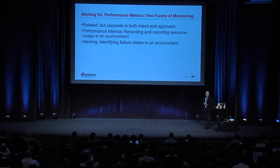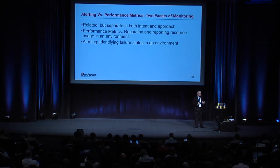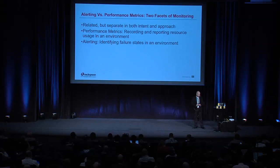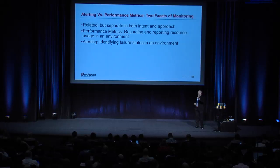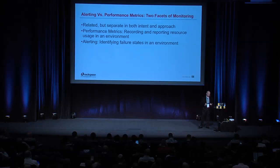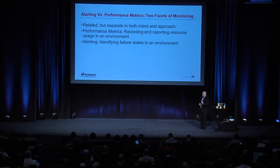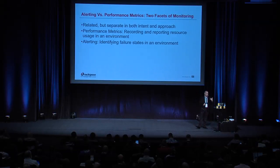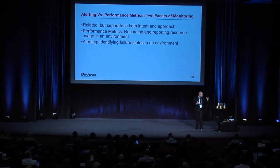Before we dive in, let's talk about monitoring semantics. There are two main facets to monitoring: performance metrics and alerting. The purpose of performance metrics is to measure and report on quantifiable data — utilization of various aspects of your system — which lets you identify if resource constraints are relevant during an incident or root cause analysis, and to forecast growth. Alerting, by contrast, is oriented around identifying failure states in the environment: taking the events that occur in a system and identifying which ones indicate a failure state and require action.